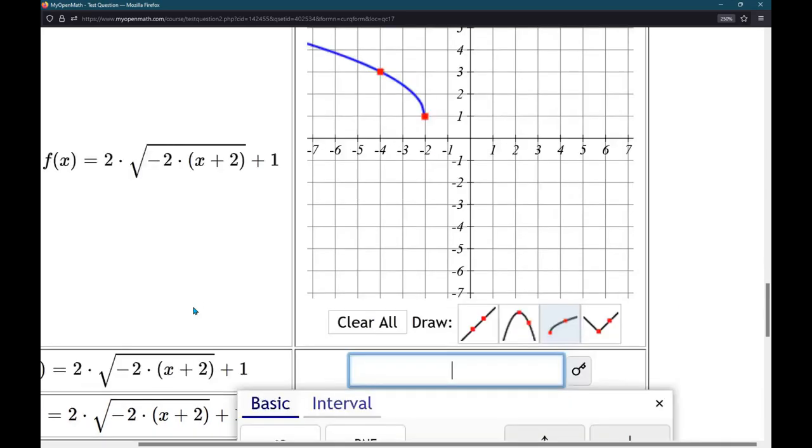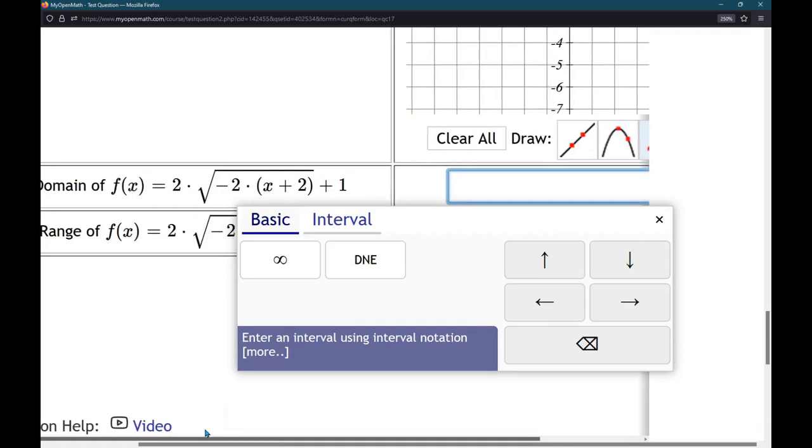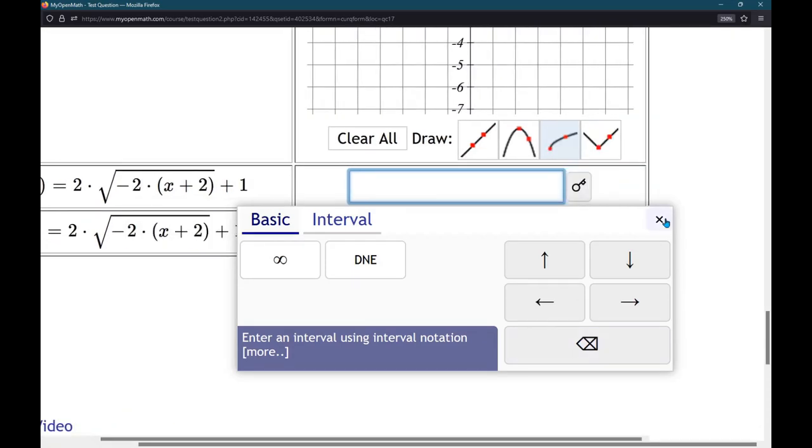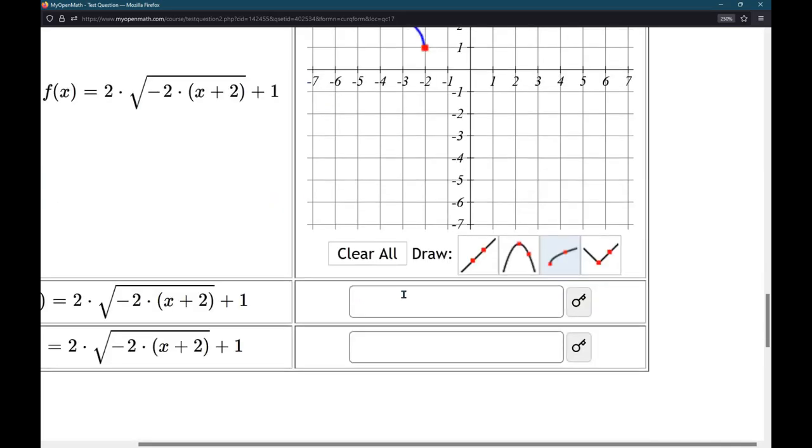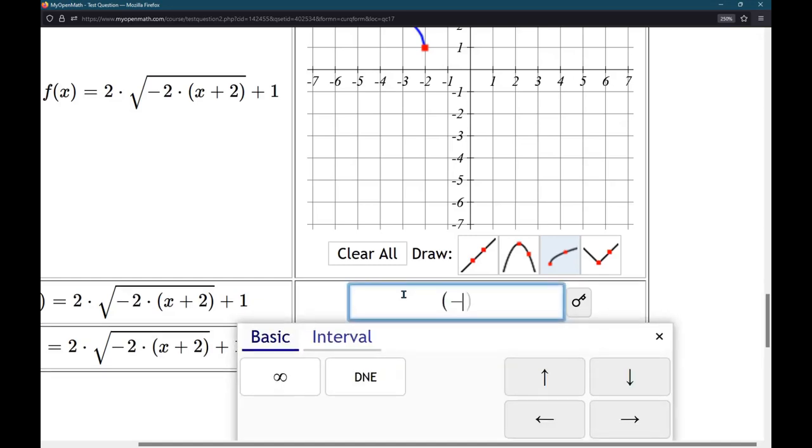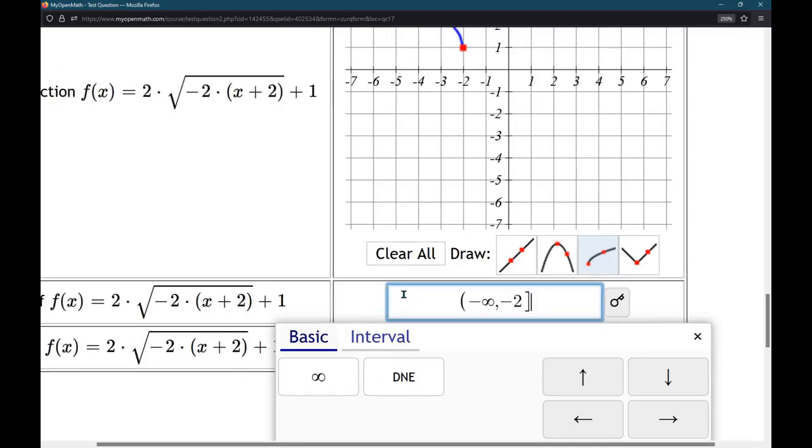We can answer this first part, which is the, I believe it's the domain first and the range second. Yeah, domain first, range second. All right. Domain. Now, negative 2 is the largest x value, but it goes everything smaller than negative 2. So, this is going to be negative infinity, comma, negative 2. Close at negative 2.